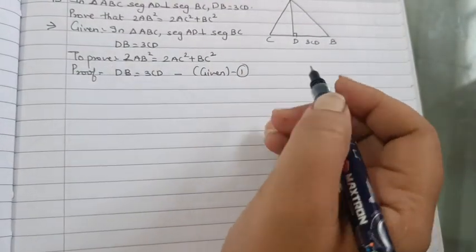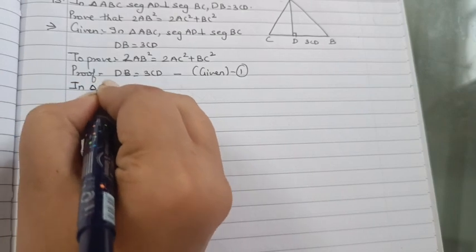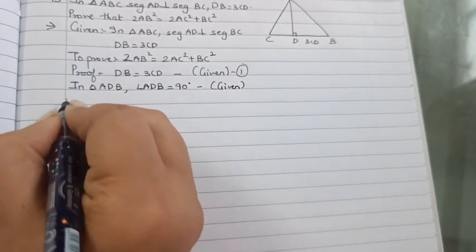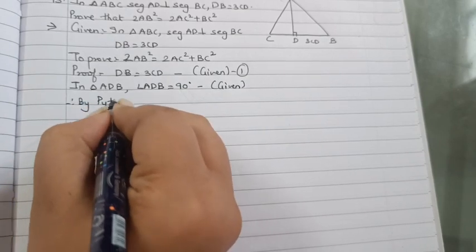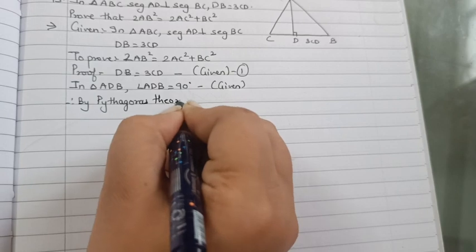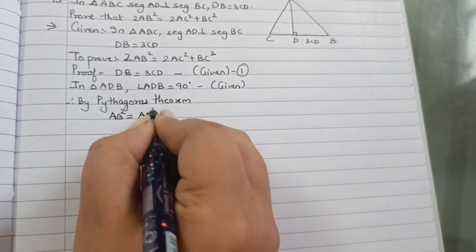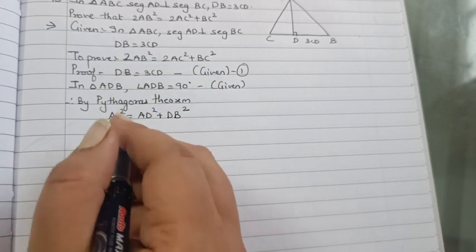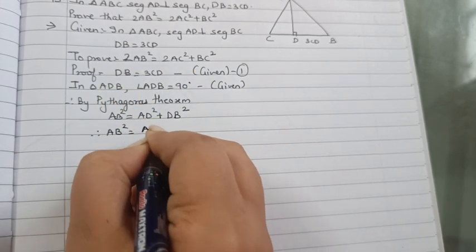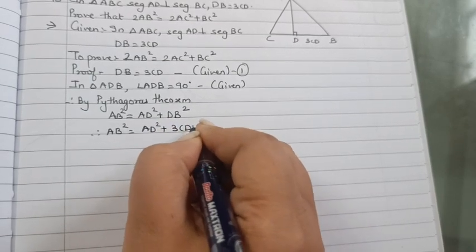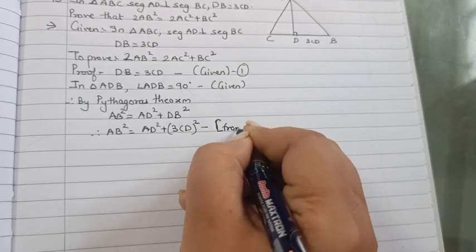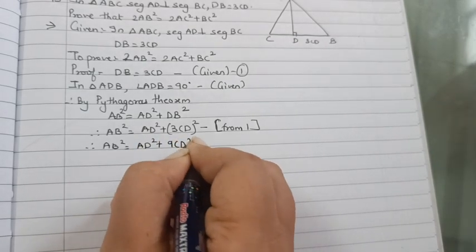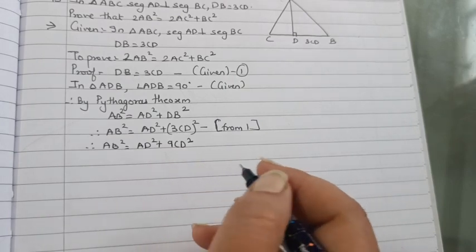DB equal to 3CD, it is given. Now in triangle ADB, angle ADB is 90 degree. So therefore by Pythagoras theorem, AB² equal AD² plus BD² or DB². DB is 3CD, so therefore AB² equal AD² plus 3CD squared.